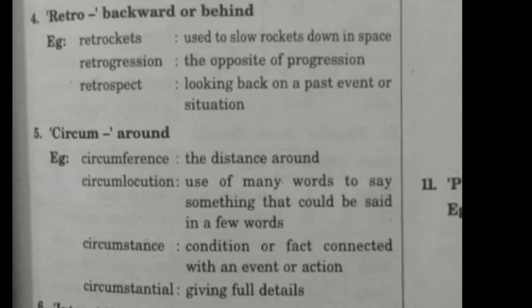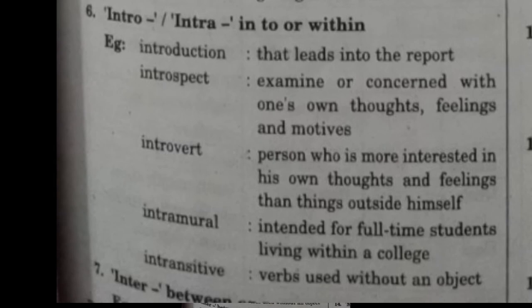The prefix 'circum' means around — for example, 'circumference' (the distance around) and 'circumstances' (conditions or facts connected with an event or action). The next prefix is 'intro/intra,' meaning into or within — for example, 'introduction' (that which leads into a report, study, or lesson), 'introspect' (to examine one's own thoughts, feelings, and motives), and 'introvert' (a person more interested in his own thoughts and feelings than things outside himself).